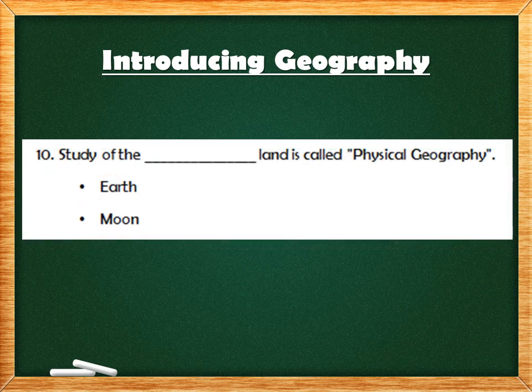Question 10: Study of the blank land is called physical geography. Physical means you can touch it, so the study of the earth's land is called physical geography. The answer is Earth.